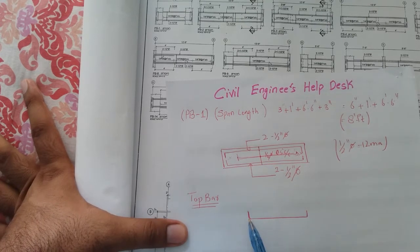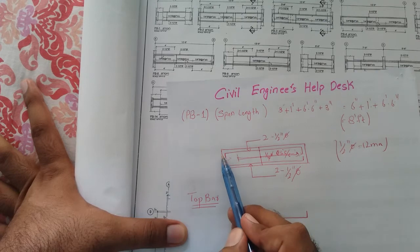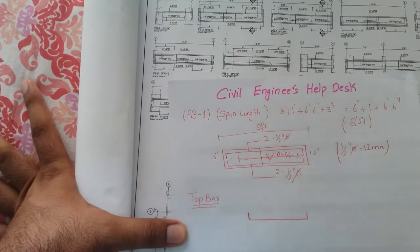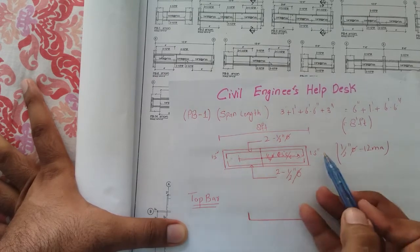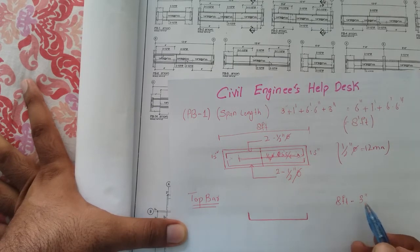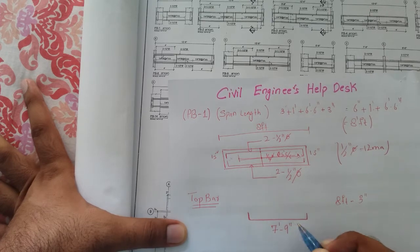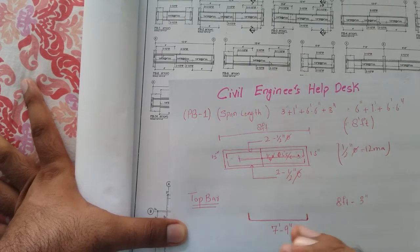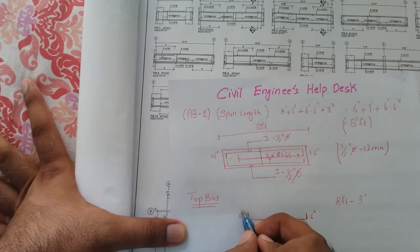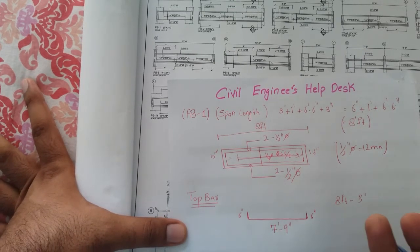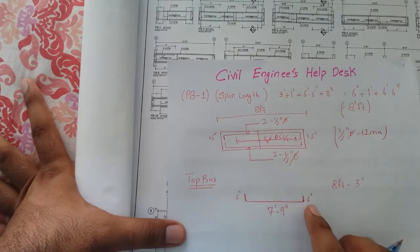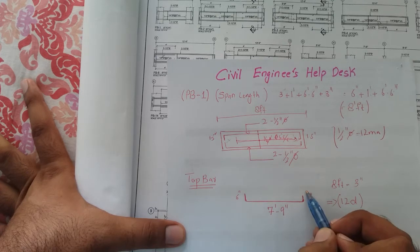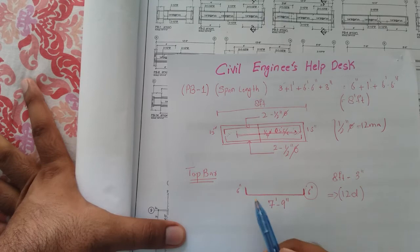Now we work for the top bar. The top bar has a cover of 1.5 inches on each side, and the span is 8 feet. So: 8 feet minus 3 inches (1.5 + 1.5) gives 7 feet 9 inches — that is the straight length of the top bar. For the L-bend, the diagram states it should be 6 inches. If the length of L is not mentioned in the drawing, use the formula: 12 times the diameter of the bar.